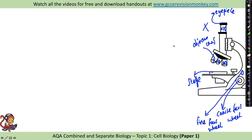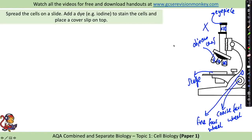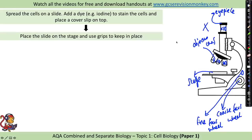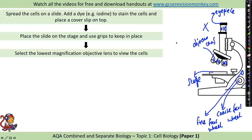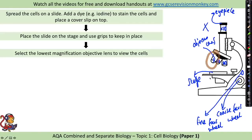Now I'm going to take you through the steps to carry out this required practical. First, to prepare the slide you need to spread the cells on the slide, add a dye — for example iodine — to stain the cells, and then add a cover slip on top. This is just a small transparent square so that you don't get any of the dye onto your lenses. Place the slide on the stage and use the grips to keep it in place. Select the lowest magnification objective lens first — for example, 4 × 10, which is 40 times magnified.